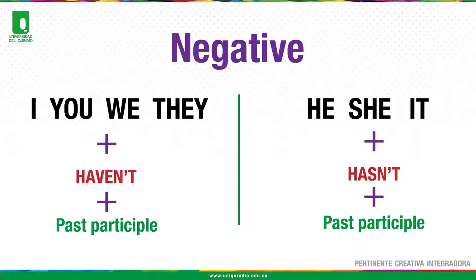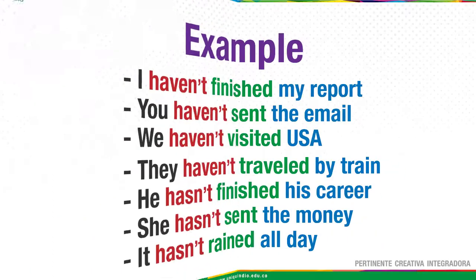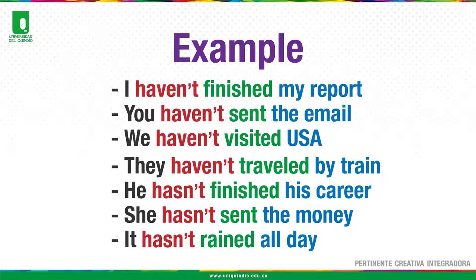Negative structure: Subjects I, you, we, they, plus haven't, plus past participle. Third person he, she, it, plus hasn't, plus past participle. Examples: I haven't finished my report. You haven't sent the email. We haven't visited USA. They haven't traveled by train. He hasn't finished his career. She hasn't sent the money. It hasn't rained all day.